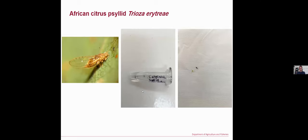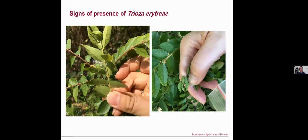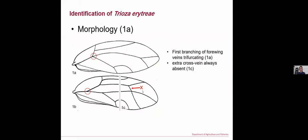The psyllid Cacopsylla is the vector for transmitting the African citrus greening disease. Even though they look very tiny, they look beautiful under microscopy — their wings resemble fairytale wings. I had the chance to observe them even though I'm not an entomologist. When they colonize the leaf, they leave holes or pumps on the leaf surface, which is a sign of their presence. To identify Cacopsylla, we look at whether it has the first branching of the forewing bands, as in picture 1A, and there is no extra cross vein as in 1B, which is for the other species Diaphorina.